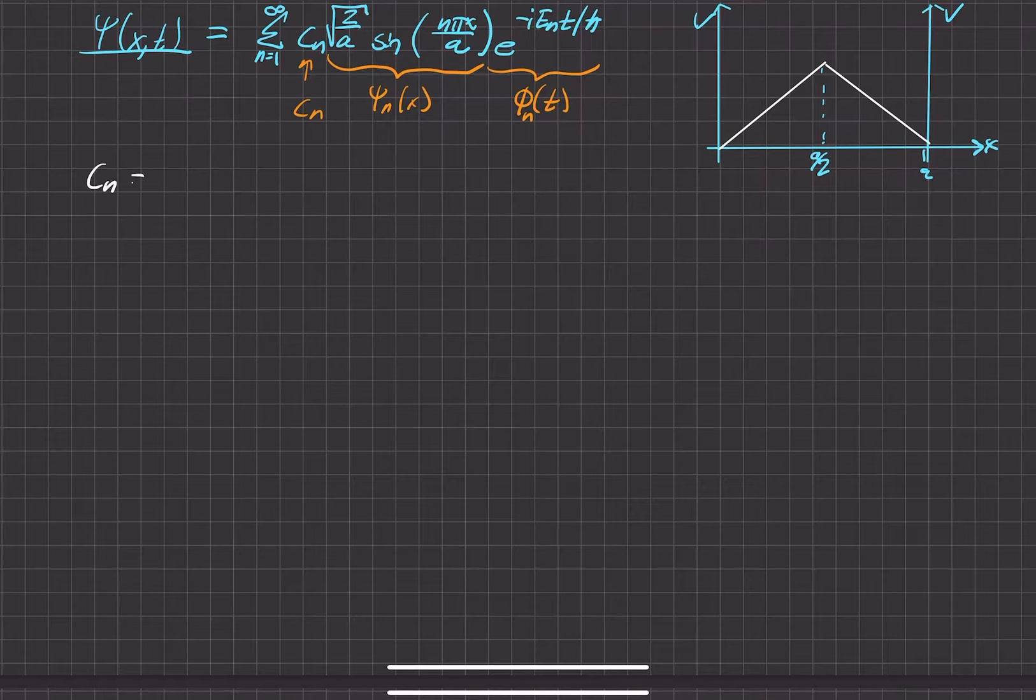Now before we even start, a good thing to do in physics, and especially here in quantum mechanics, is to get an idea of what we think c sub n is going to be. If we look at our wave function over here, it's perfectly symmetric, and we found this from the first part of the problem. It's perfectly symmetric within the infinite square well from 0 to a.